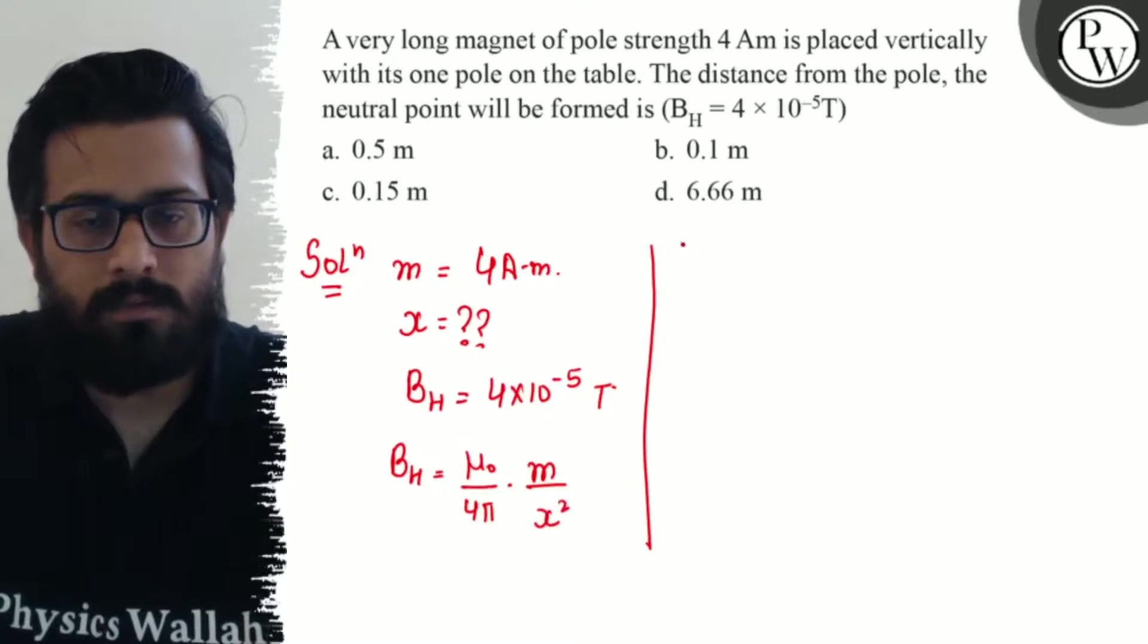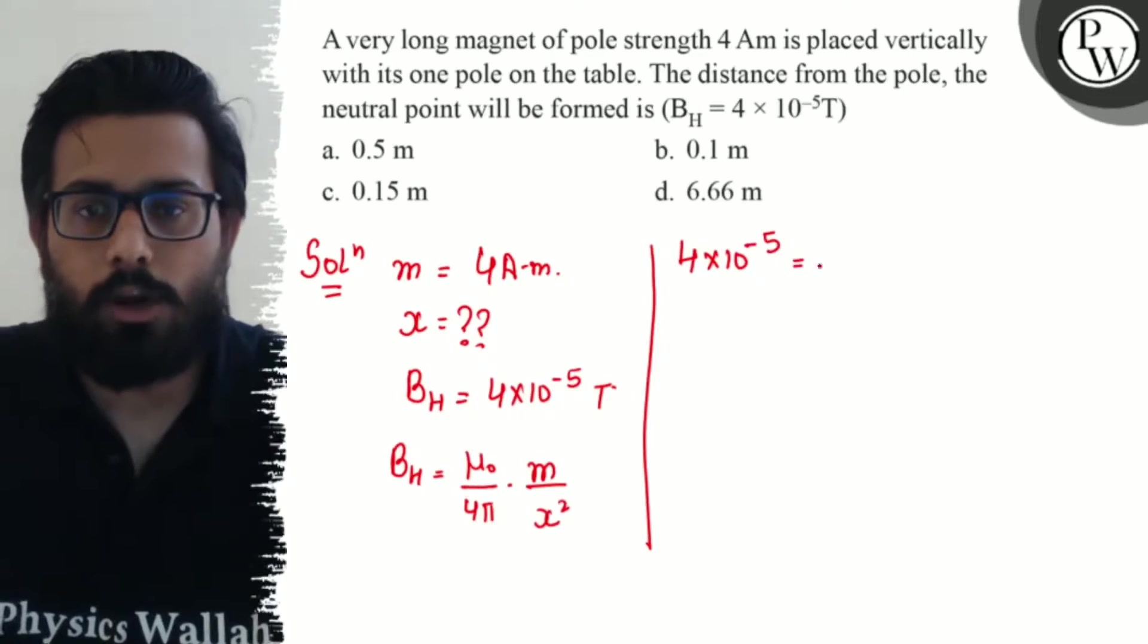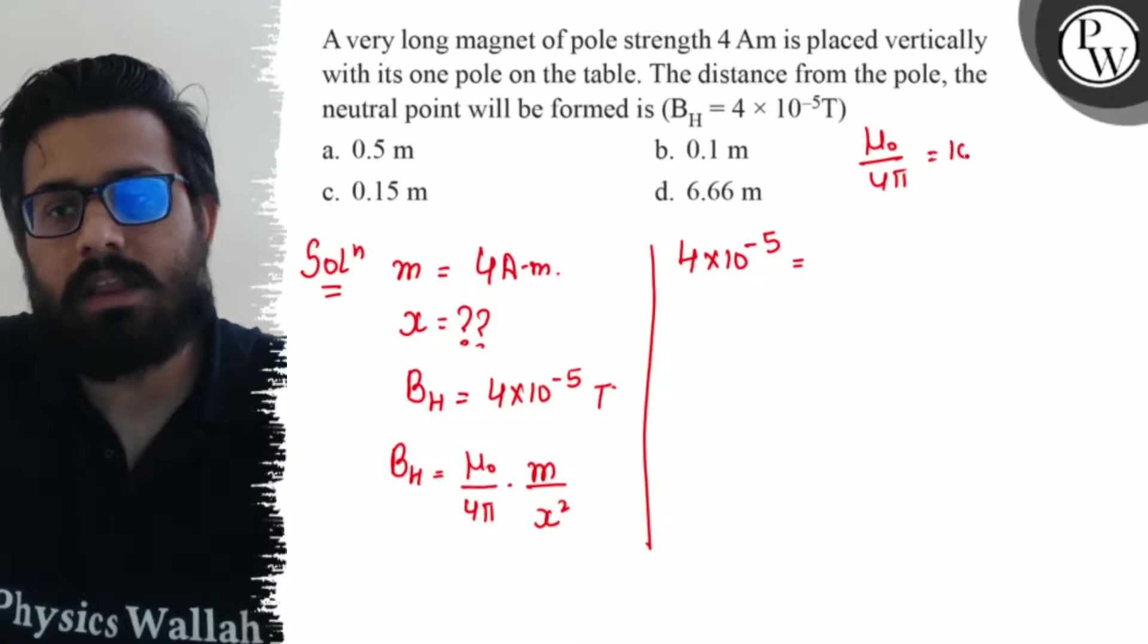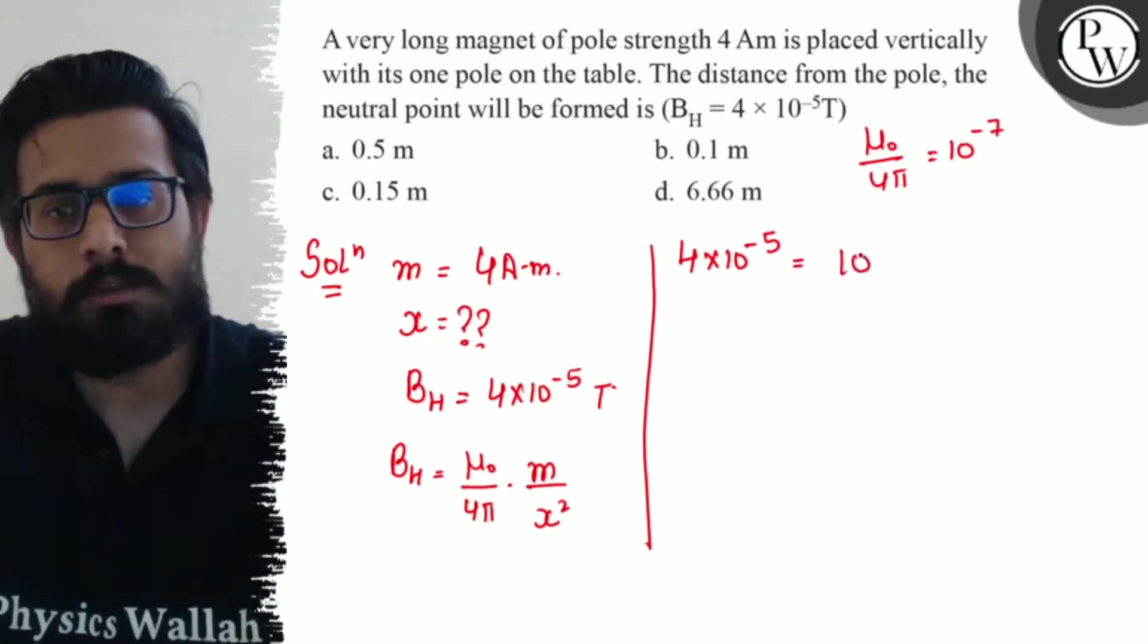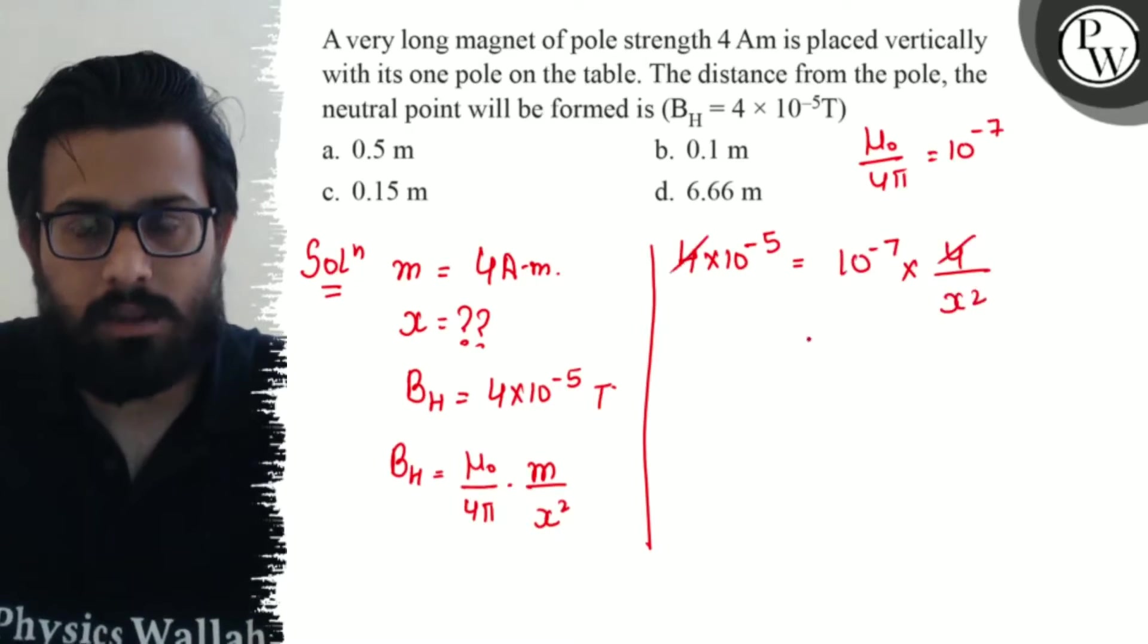Substituting values: 4 × 10^-5 = (μ₀/4π) × (4/x²). Since μ₀/4π = 10^-7, we get 4 × 10^-5 = 10^-7 × (4/x²). The 4s cancel out, and x² comes out to 10^-2.